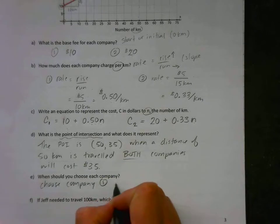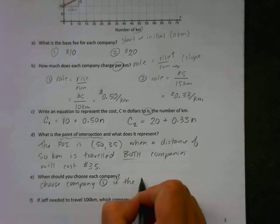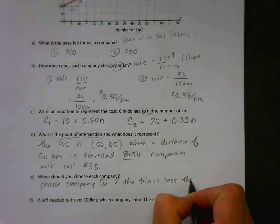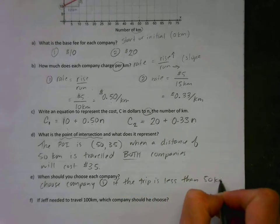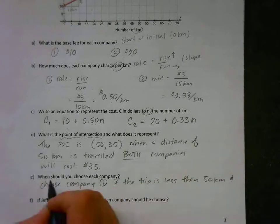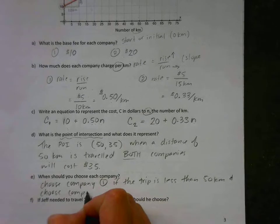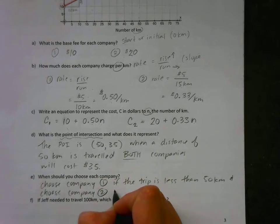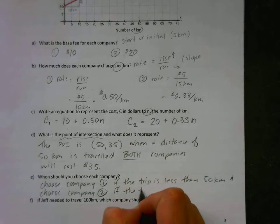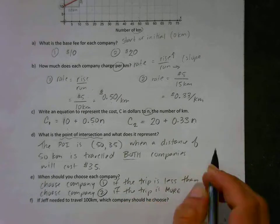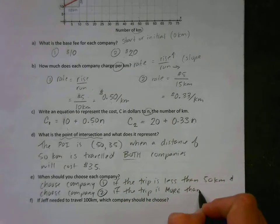When should you choose each company? It has to do with the point of intersection. So we should choose company one if the trip is less than fifty kilometers, and choose company two if the trip is more than fifty kilometers.